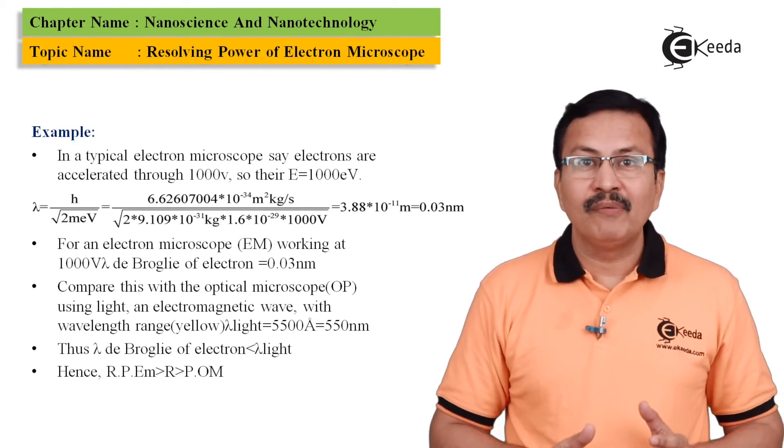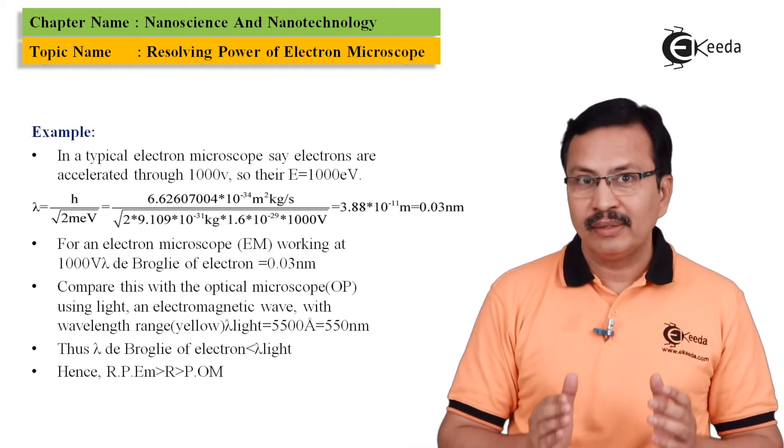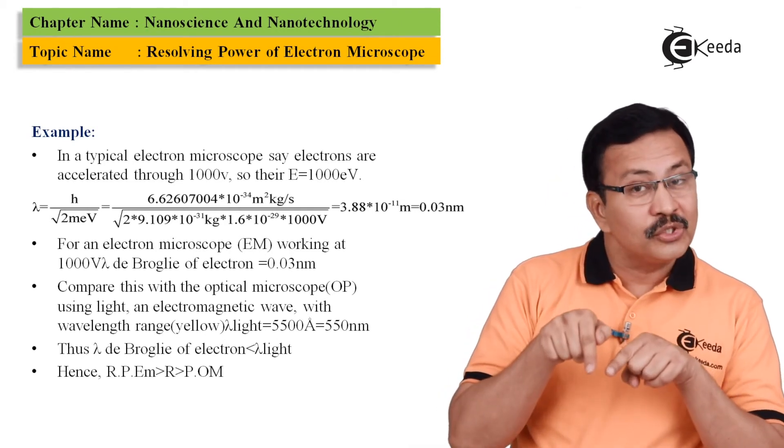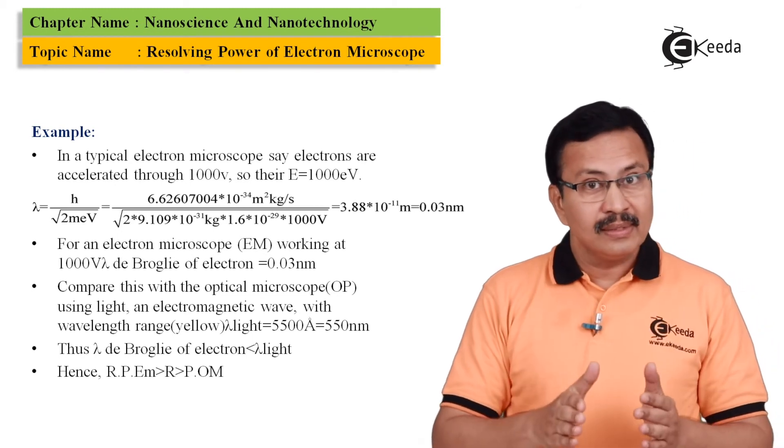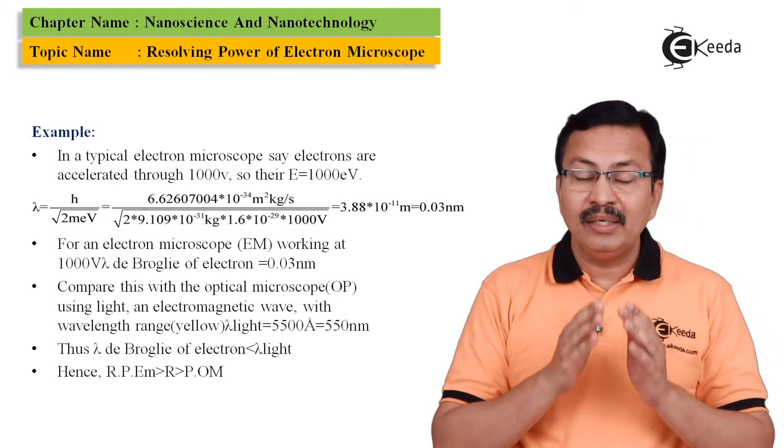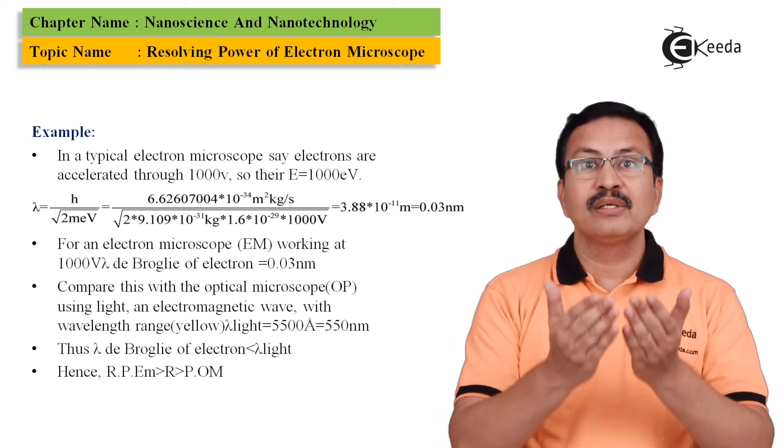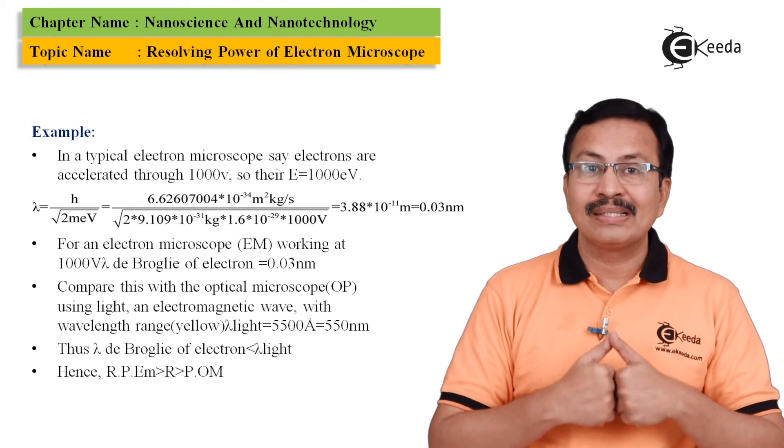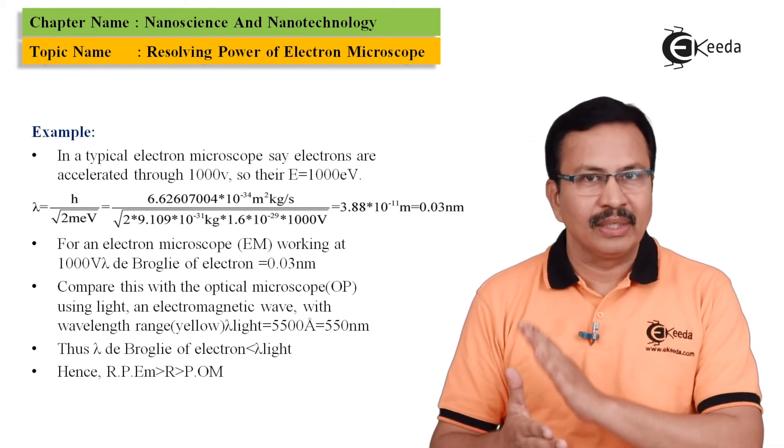the resolving power of any instrument is inversely proportional to the λ that it is using. Hence, since the λ de Broglie is small, hence the resolving power of an electron microscope is much much higher than that of an optical microscope.